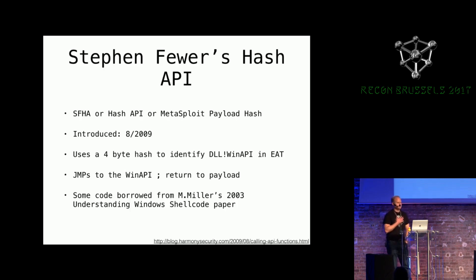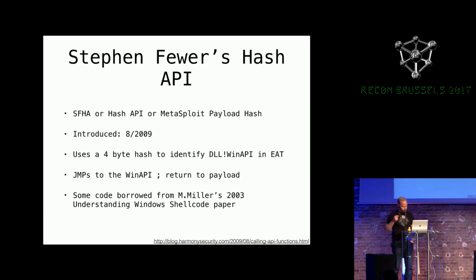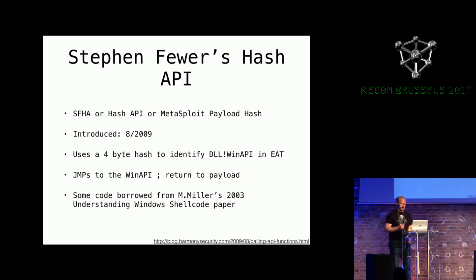Today I'm going to be targeting Stephen Fuhrer's Hash API — it's either called the Hash API or the Metasploit Payload Hash. Does anybody know what that is? It uses a 4-byte hash, basically a 13-bit ROR instruction or rotate, and it has roots that go back to 2003 from Skape's 'Understanding Windows Shellcode' paper. It's really compact, really efficient, and actually really awesome because it parses the export table.